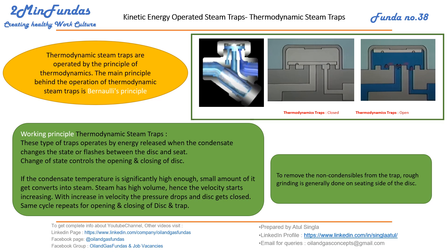When a small portion of condensate gets converted into steam, the velocity of the passing condensate increases. When velocity increases at this section, pressure starts dropping. As pressure drops, the disc starts coming down. Steam accumulates at the top portion of the disc, which further pushes the disc down and closes the trap.